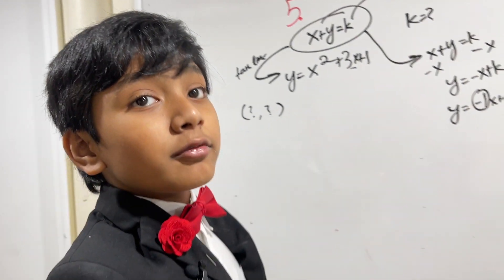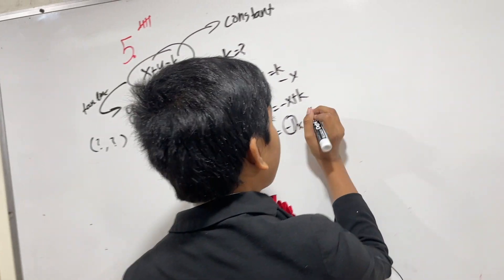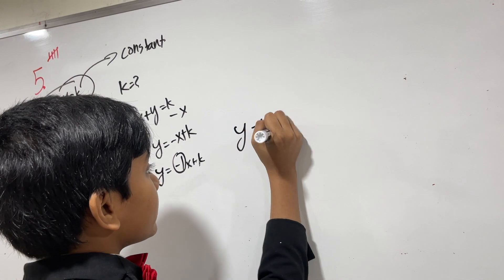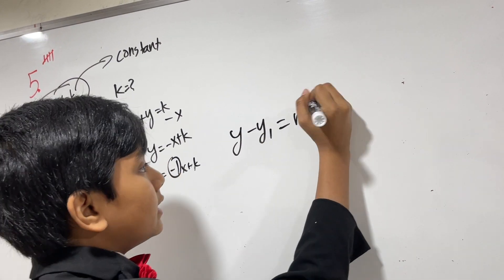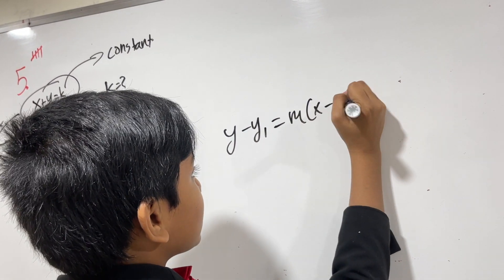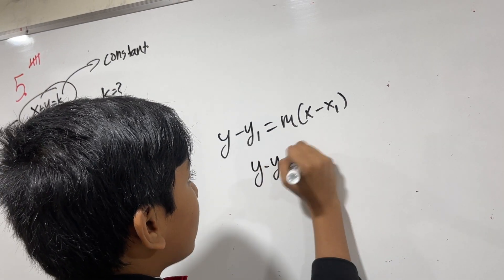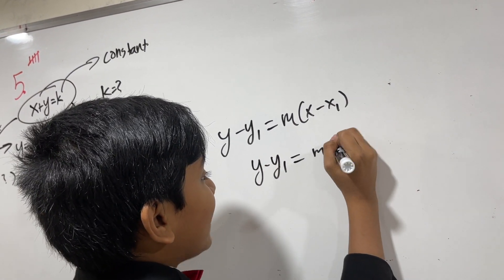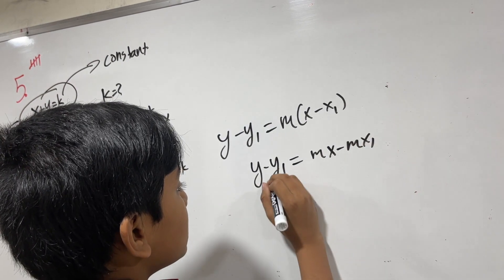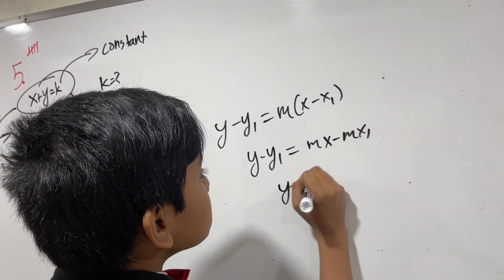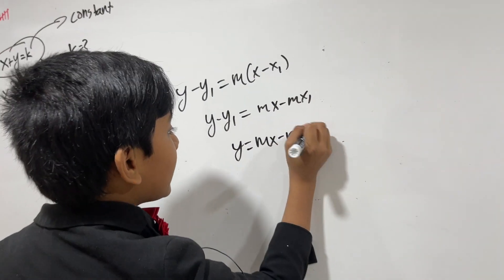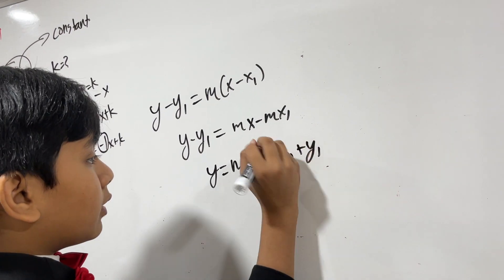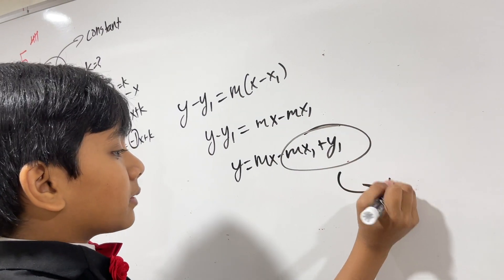And the thing is, with a coordinate, we can actually figure out k, because if you remember this formula, y minus y1 is equal to m times x minus x1, we got y minus y1 is equal to mx minus mx1. So now, adding y1 to both sides, mx minus mx1 plus y1, this whole thing is going to be our k.